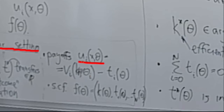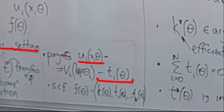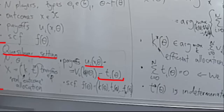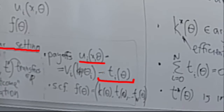Player i's utilities can be split into a real utility v_i that only depends on the allocation k implemented but does not depend on the transfers. Transfers enter the utility additively, so there is a linear term t_i of theta, where t_i of theta is the amount of money that player i pays to the mechanism. There is some sign convention ambiguity in the literature — in this course I will stick with the minus, so t_i is the amount players pay to the mechanism, but t_i can of course be negative.